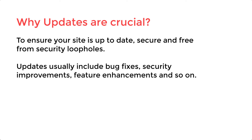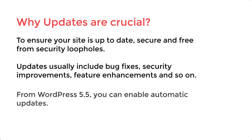Therefore, whenever there are any updates available, you should always do it. Since updates for your themes and plugins don't arrive on a regular basis, you have to manually check from time to time to update them. This can be a tedious task. However, we have an easy solution. From WordPress version 5.5, you can enable automatic updates for all of your themes and plugins.